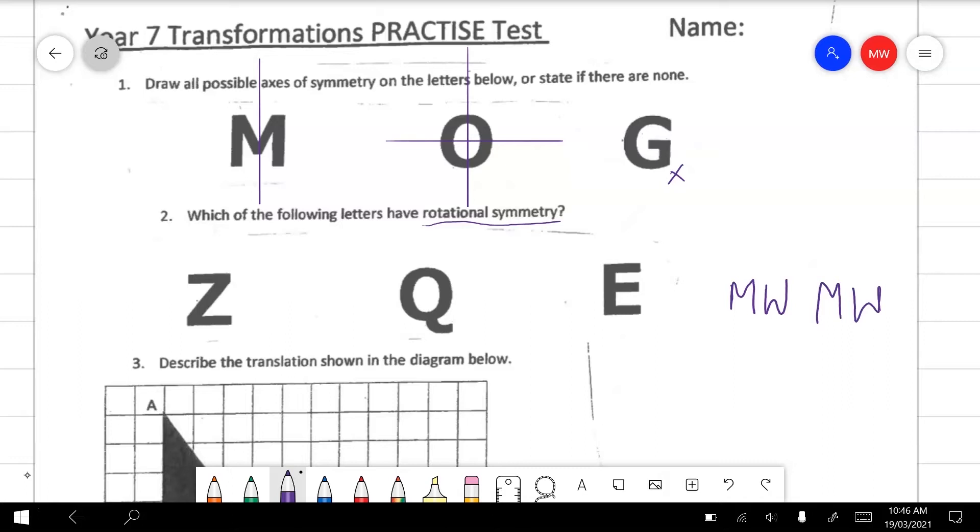So if you have a look at these letters, we could turn Z around and it would have rotational symmetry. But if we turned Q upside down it would not. And nor would E.